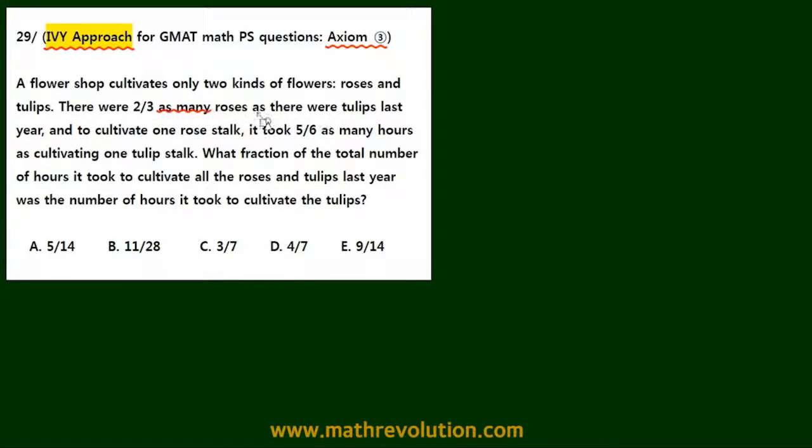Now we need to look at the phrase 'as many as'. So we have 2/3 in front of the phrase 'as many', and we have the subject roses and one more subject tulips.